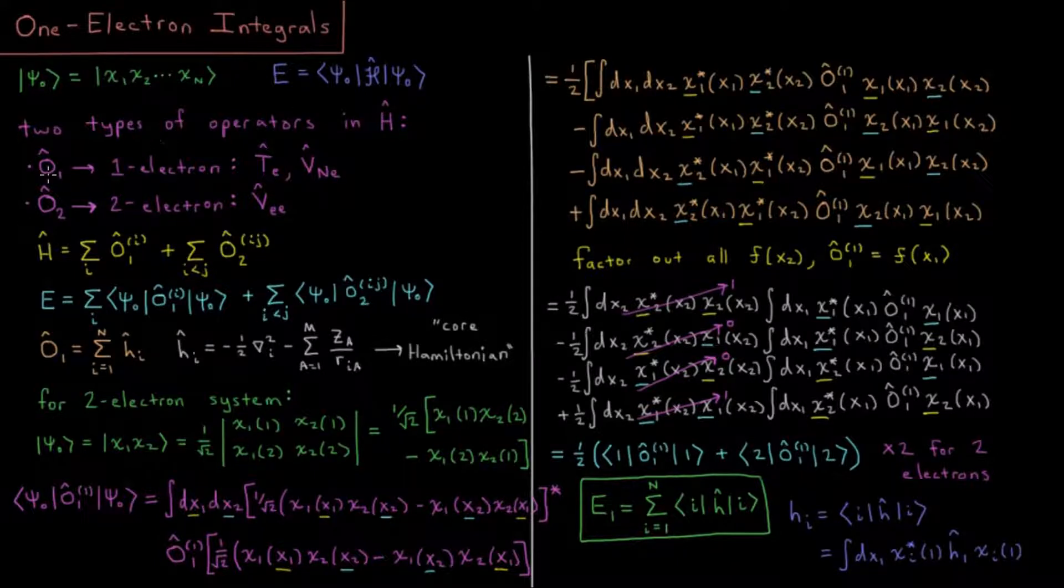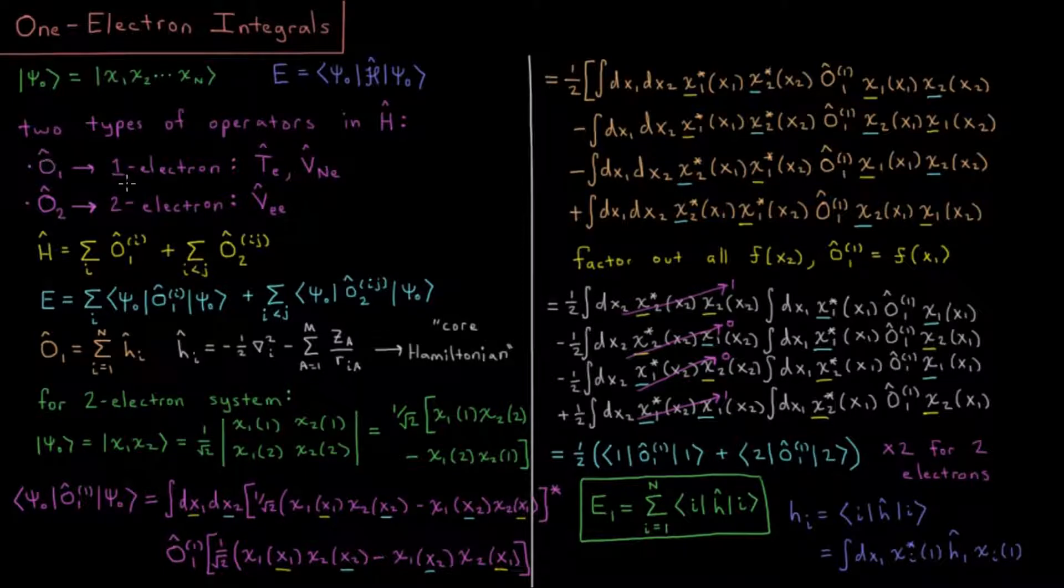There's going to be things that depend on one electron at a time, or what we would call one-electron operators. In our electronic Hamiltonian, these are going to be things like the kinetic energy operator of electrons and the potential energy operator for nuclear-electron attraction.